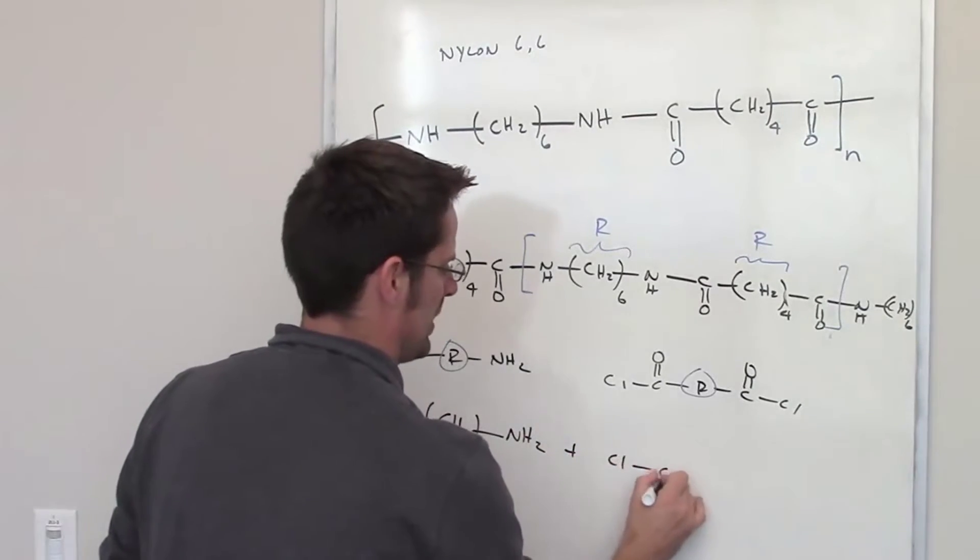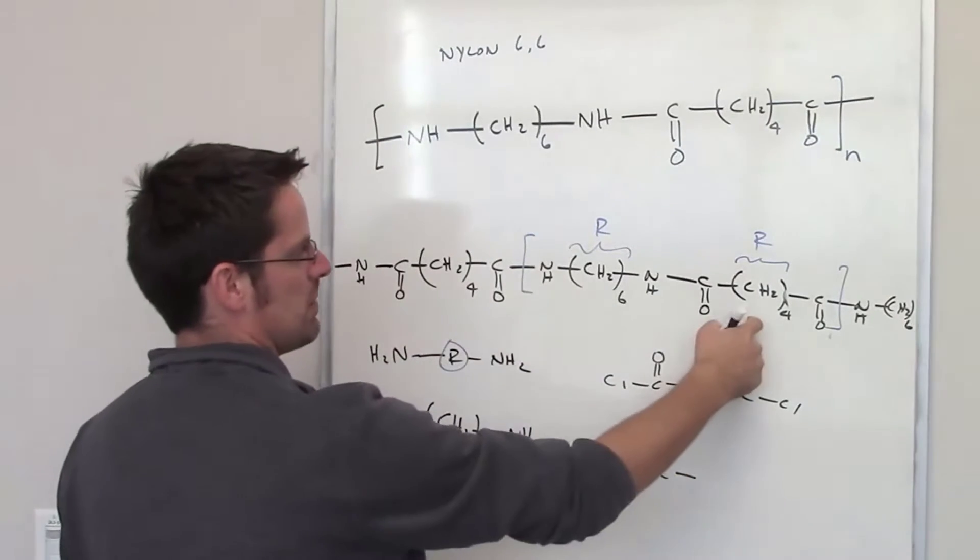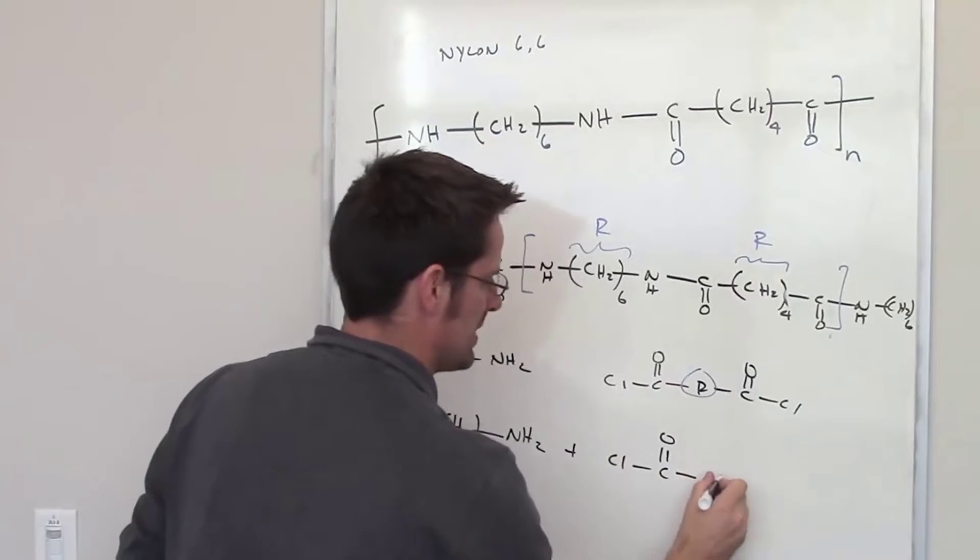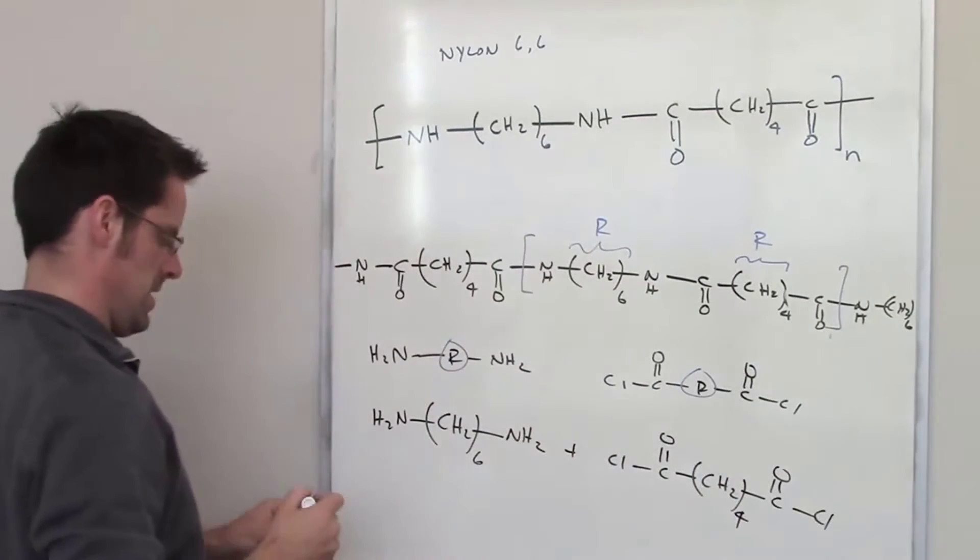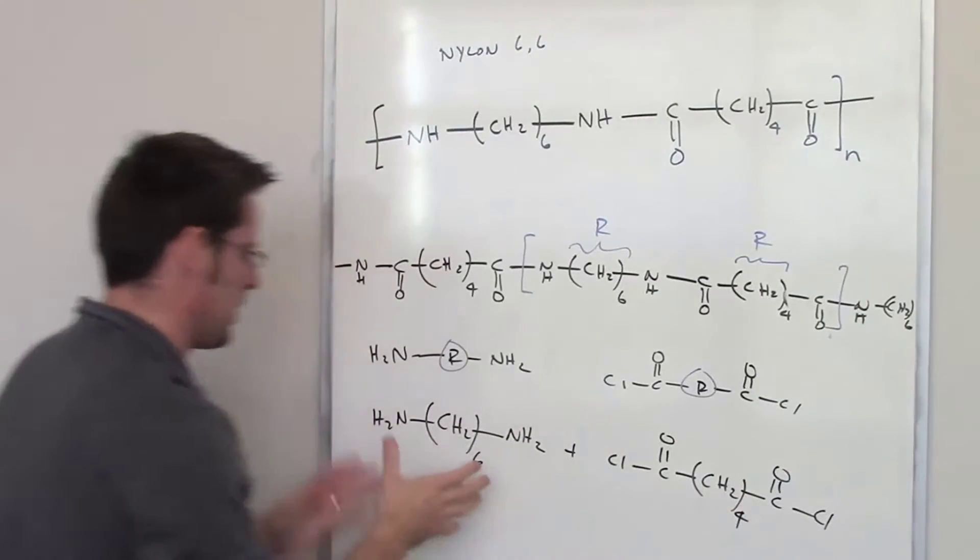And then over here, I've got my chlorine stuck to my carbon oxygen double bond, and the R here is going to be CH2-4, and that. So, it's a diacid chloride reacted with a diamine.